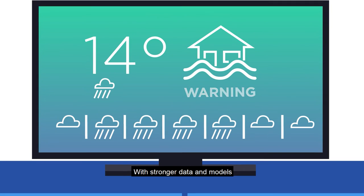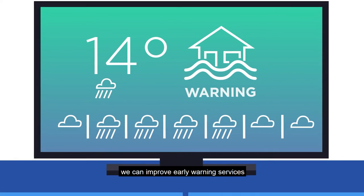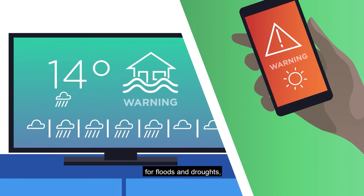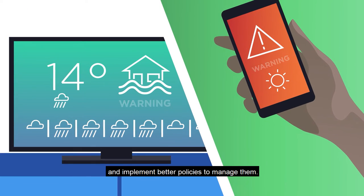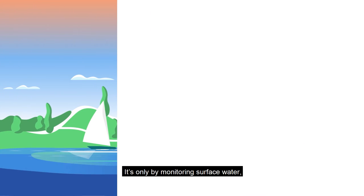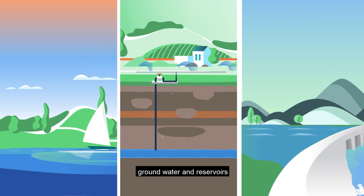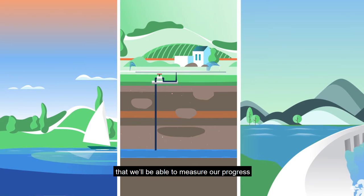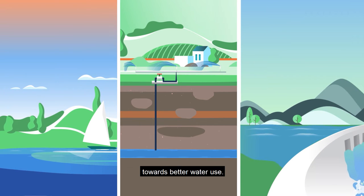With stronger data and models, we can improve early warning services for floods and droughts, and implement better policies to manage them. It's only by monitoring surface water, groundwater and reservoirs that we'll be able to measure our progress towards better water use.